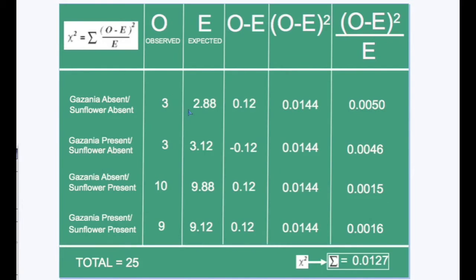The next step in the manual completion of the chi-squared test requires a table like this, including the observed value, the expected value, observed minus expected, observed minus expected squared, and finally observed minus expected squared divided by E. This is known as the chi-squared formula. Next all of the values in the final column are summed up. The sum of this column gives the final value for chi-squared. In this case, chi-squared comes to 0.0127.